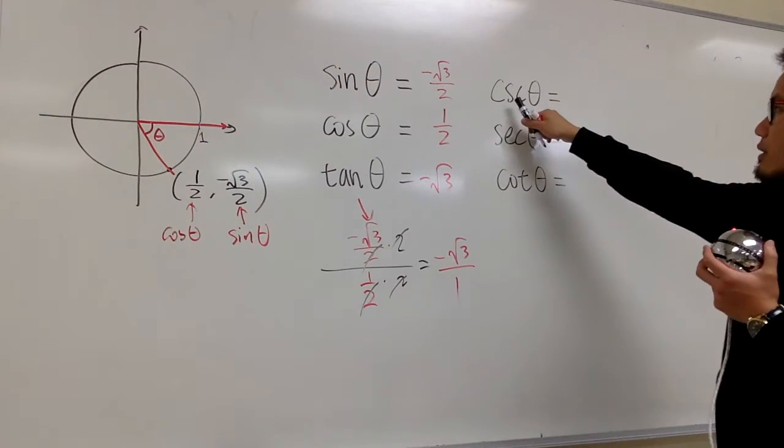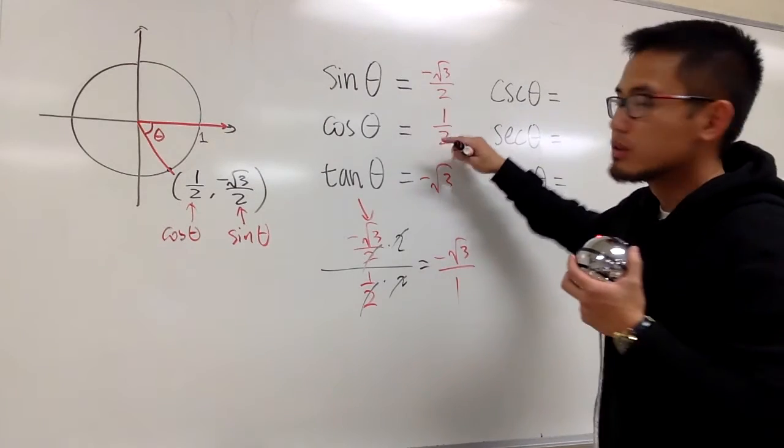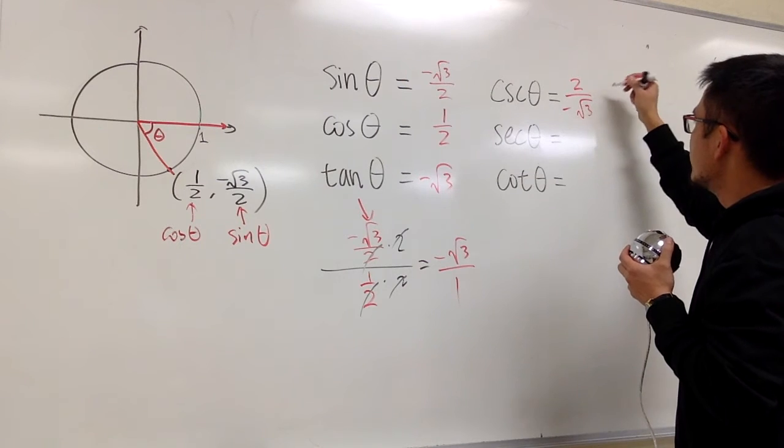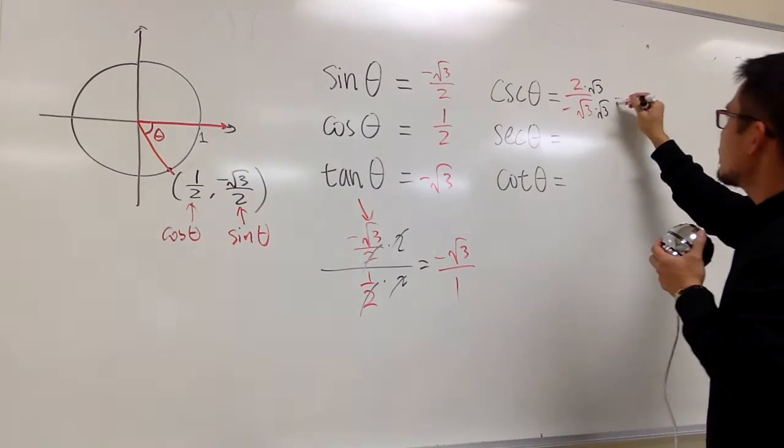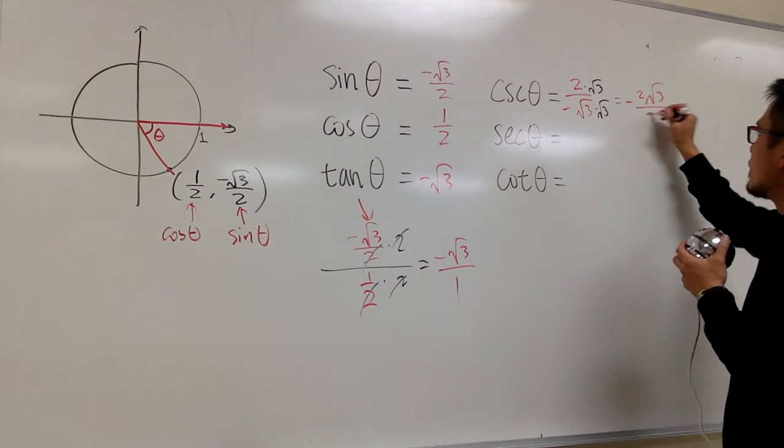Now for cosecant theta, it's 1 over the sine value: 2 over -√3. Multiply the top and bottom by √3, giving us -2√3/3.